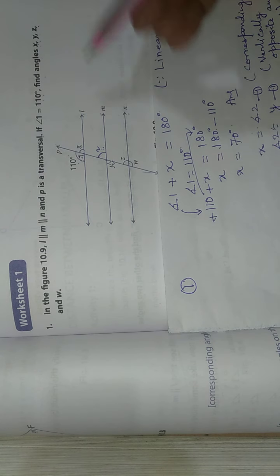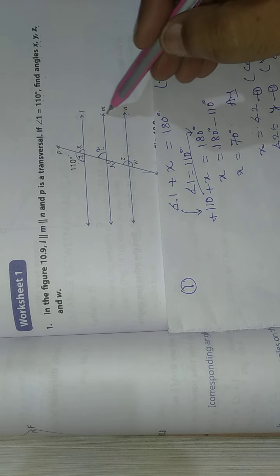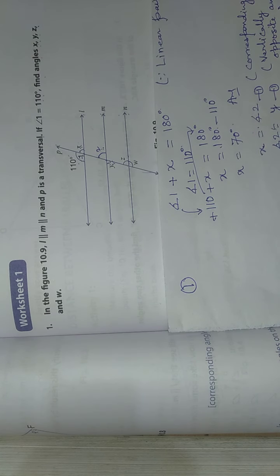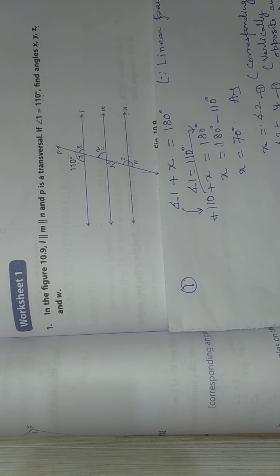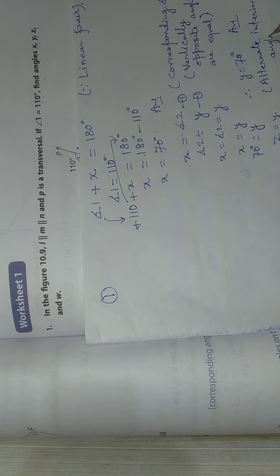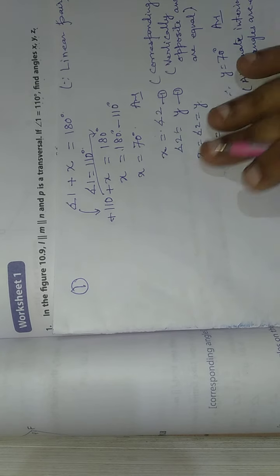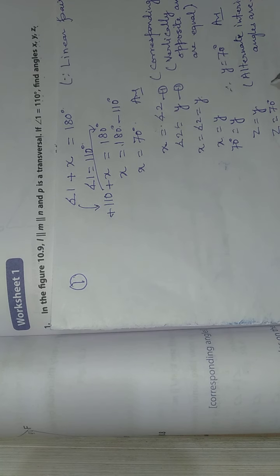Now we need to find Z. Y and Z are alternate interior angles because the lines are parallel. Alternate interior angles are equal. Therefore, since Y = 70 degrees, Z is also equal to 70 degrees.